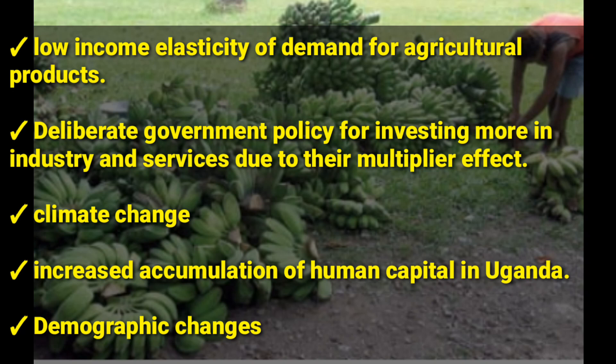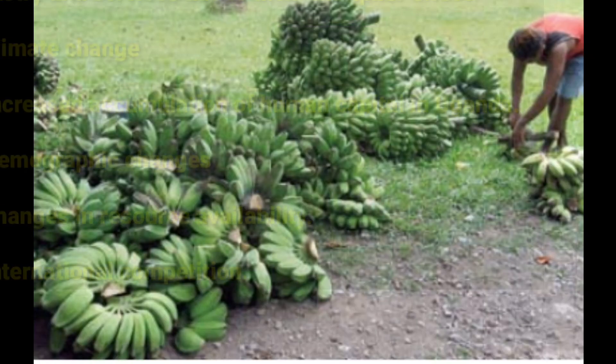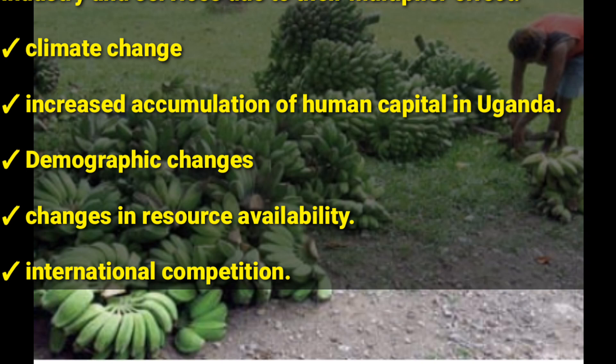Another reason is changes in resource availability. Land is diminishing as the population grows rapidly. The agriculture sector is impacted more than the other two sectors since it is land-intensive. So the land available for practicing agriculture keeps reducing every day.